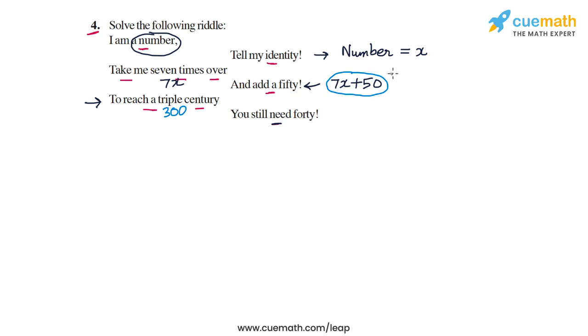And the riddle says that this number is still 40 less than 300. So, this is how we get our equation. 7x plus 50 is 40 less than 300. So, this is equal to 300 minus 40.